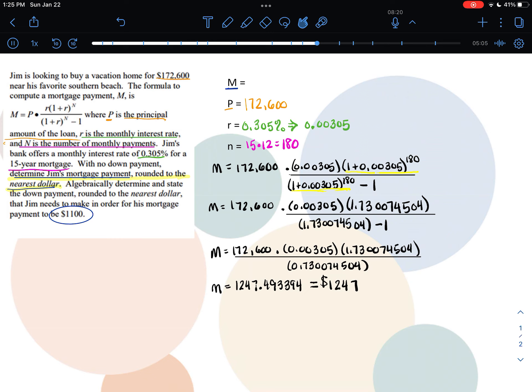The second part of the problem says I need to determine and state the down payment rounded to the nearest dollar that Jim needs in order to make his mortgage payment be $1,100 a month. So apparently the $1,247 must be too much for him to do. So I now need to make sure that that M somehow works out to be $1,100. So I'm putting $1,100 in for my M and I need to find out this time what his principal is going to be in order to get that.